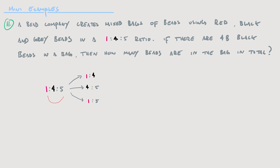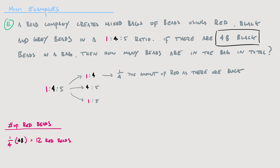We know the number of black beads, which helps us find red and gray using the relating ratios. The 1 to 4 ratio — red to black — tells us there's one fourth the amount of red as black beads. So I take the known number of black beads, which is 48, and multiply by one fourth (or divide by 4). That gives us 12 red beads in the bag.